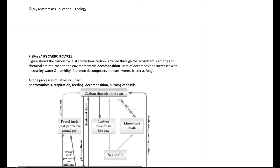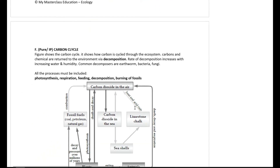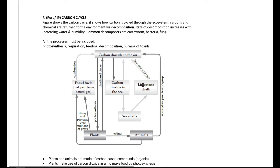This is the carbon cycle for pure and IP biology students — practice how to sketch this, as it can come out as a 5 to 6 mark question. Carbon dioxide in the air is taken in by the sea and by plants for photosynthesis. The sea acts as a carbon sink, storing carbon, as CO₂ is slightly soluble in water, and aquatic plants also use it for photosynthesis.